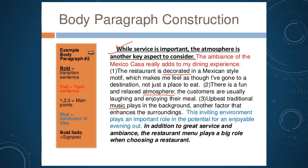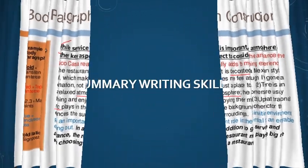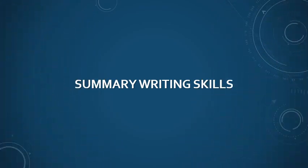The concluding sentence: 'This inviting environment plays an important role in the potential for an enjoyable evening out.' This concludes the paragraph and gives a future prospect — that the environment has the potential to provide an enjoyable evening. Then the signpost transition reads: 'In addition to great service and ambience, the restaurant menu plays a big role when choosing a restaurant.' This signpost leads the reader into the next paragraph, which will be about the restaurant's menu.